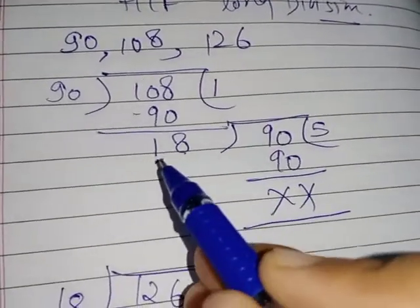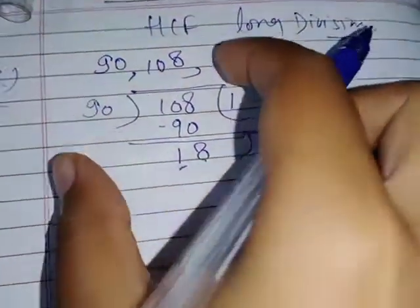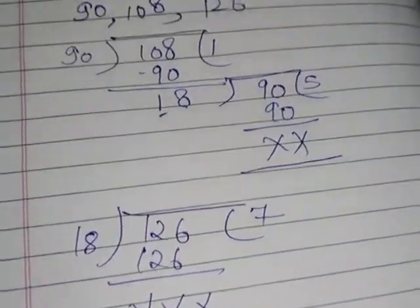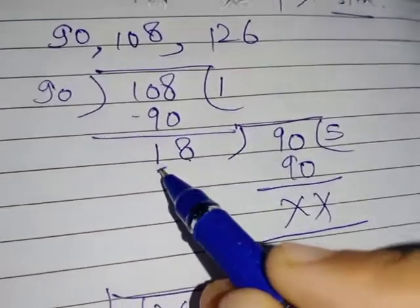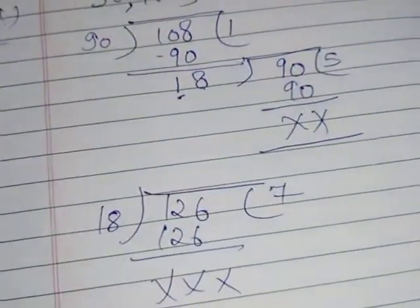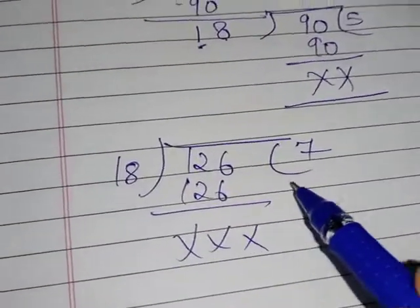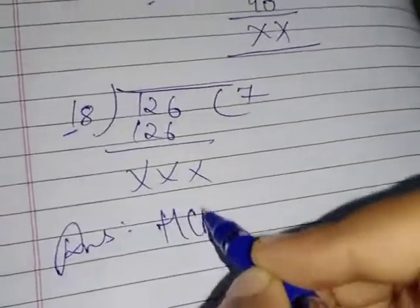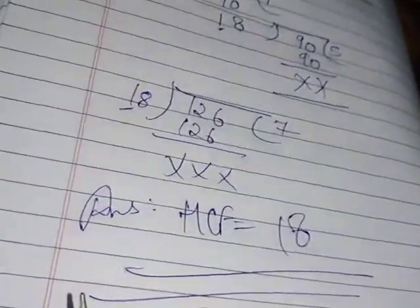the final divisor after solving all the given HCF, the final divisor which we will get. That is your answer. Now, if you have solved this, you are getting this divisor. So, your answer that is HCF here will be 18. Is it clear to you? Like this, we will find HCF using.